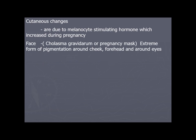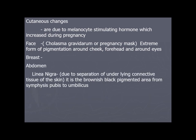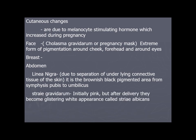All cutaneous changes are due to increased melanocyte-stimulating hormone. Chloasma gravidarum (pregnancy mask) is the extreme form of pigmentation around the cheeks, forehead, and eyes. On the abdomen, linea nigra is a brownish-black pigmented area from the symphysis pubis to the umbilicus or sometimes extending further. Striae gravidarum are initially pink but after delivery become glistening white, called striae albicans. Increased blood supply to the skin leads to sweating.